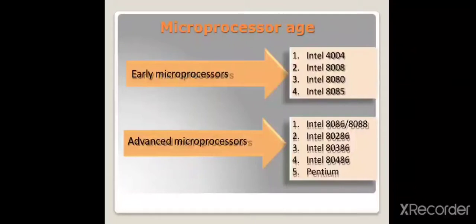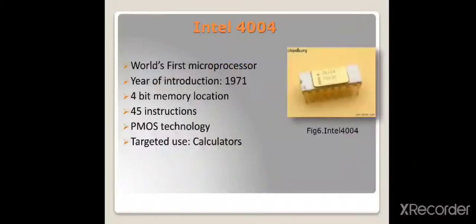In the early microprocessor age, Intel 4004, 8008, 8080, and 8085 were developed. The world's first microprocessor was Intel 4004, introduced in 1971. It was a 4-bit microprocessor with 4-bit data bus, based on PMOS technology, and targeted for use as a calculator.